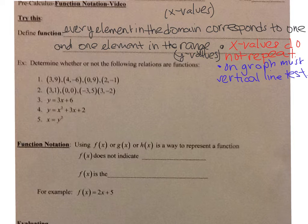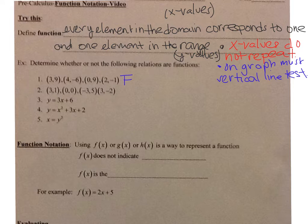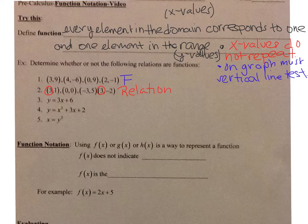Let's look at the examples — determine whether the following relations are functions. For number one, the points are (3,9), (4,-6), (0,9), and (2,-1). The x values are 3, 4, 0, and 2 — none repeat, so this is a function. For number two, the x values include 3 twice, so it is not a function — just a relation.